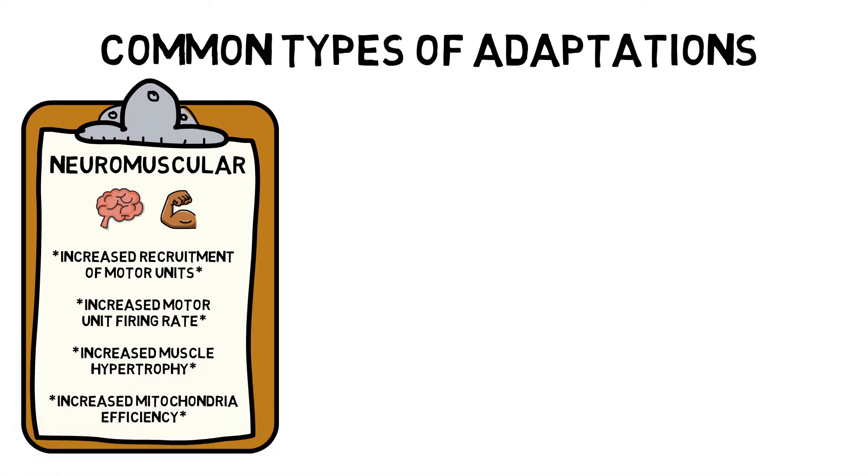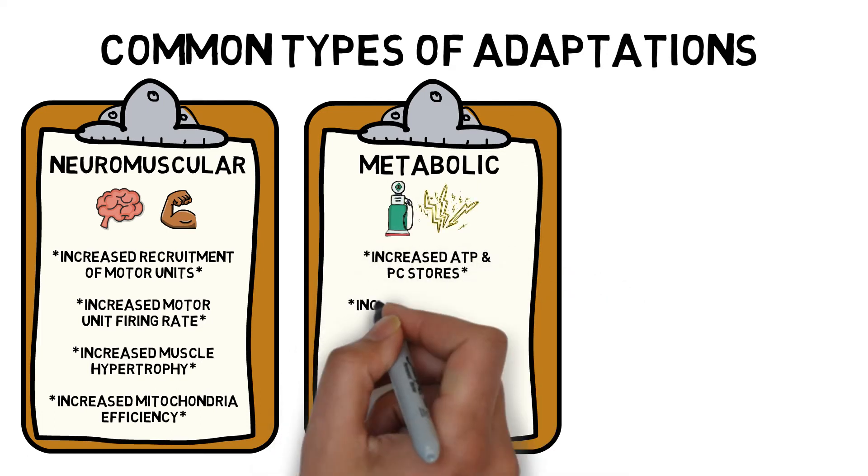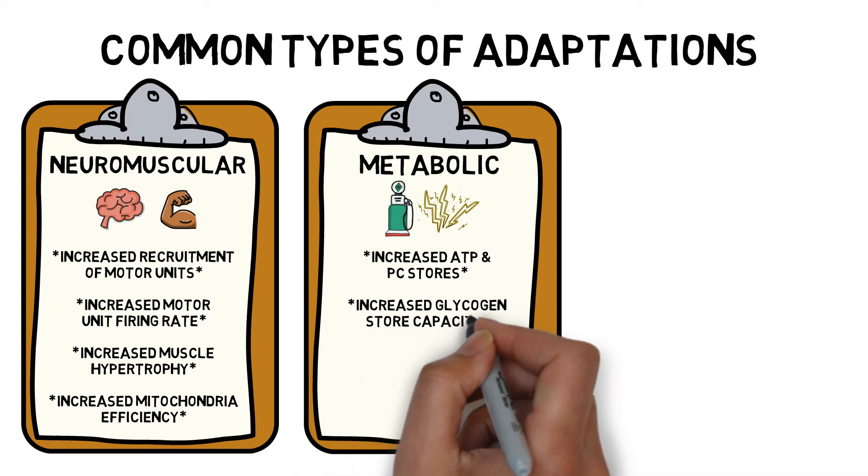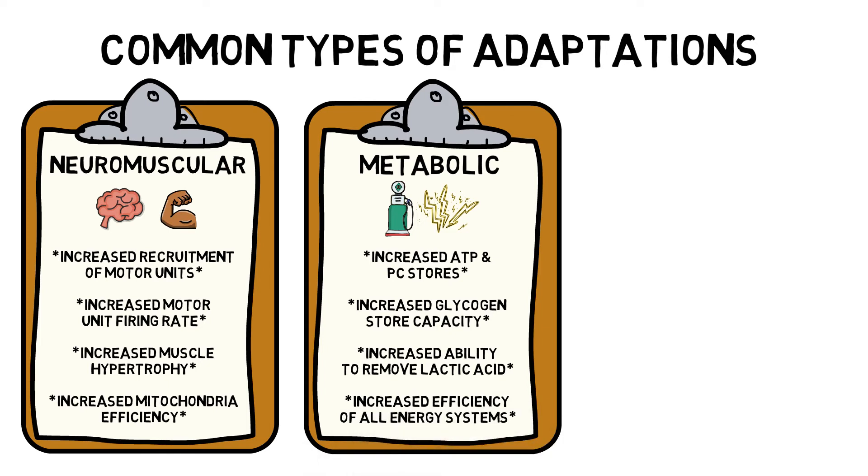Common metabolic adaptations include increased ATP and PC stores, increased glycogen store capacity, increased ability to remove lactic acid, and increased efficiency of all energy systems.